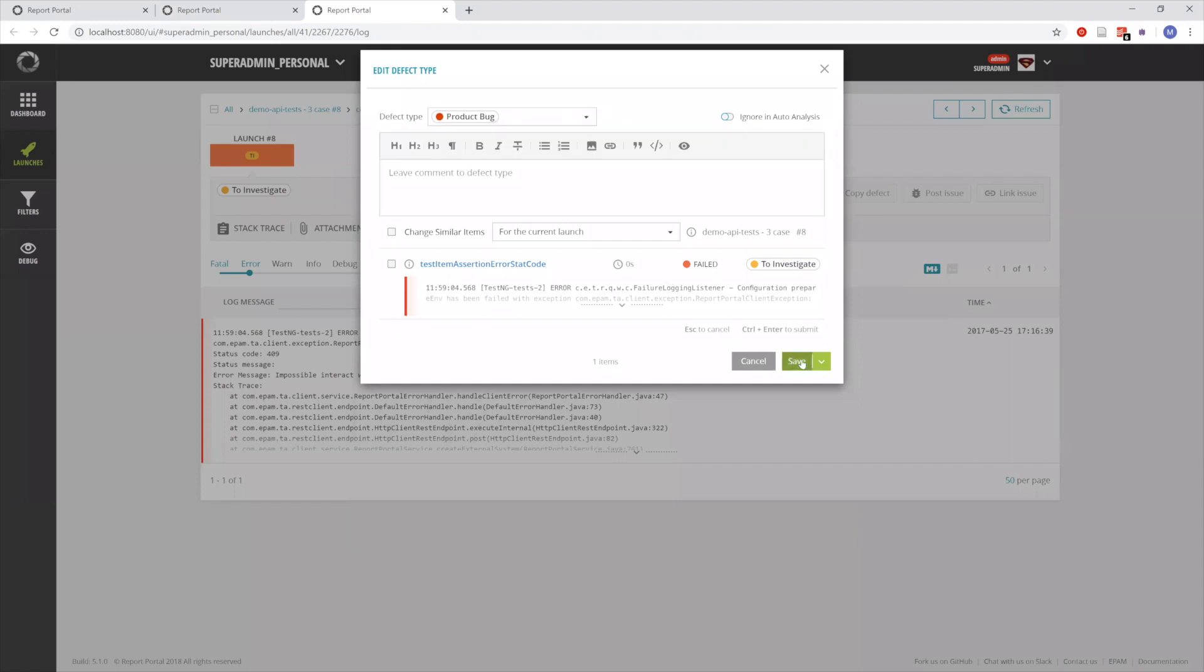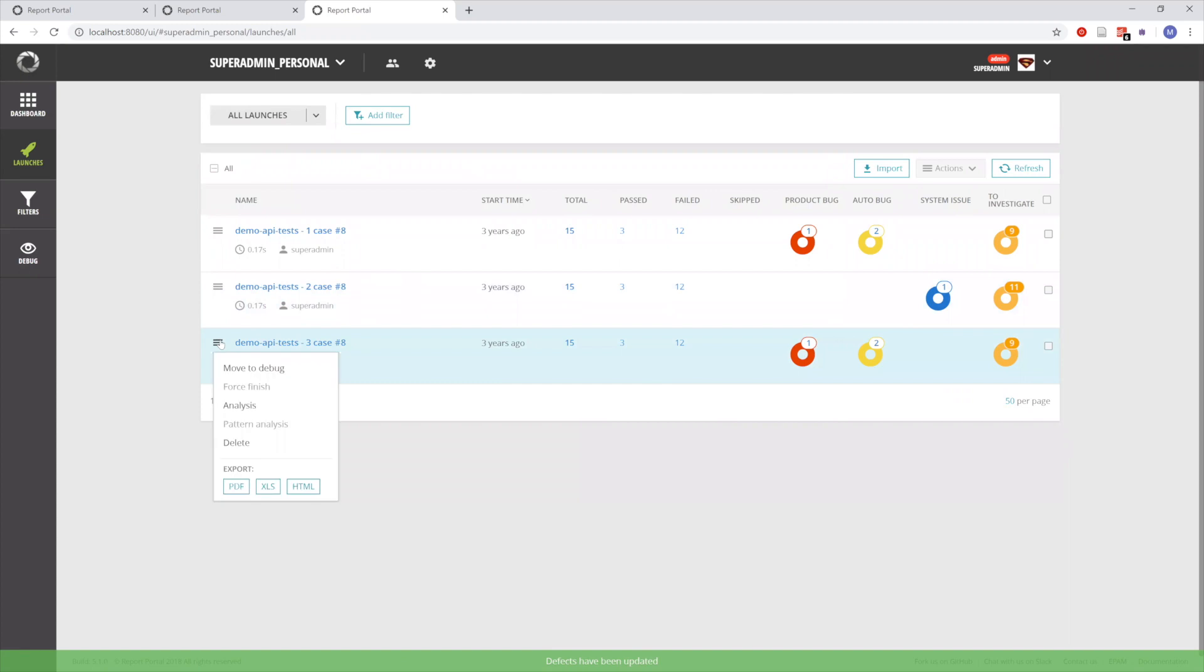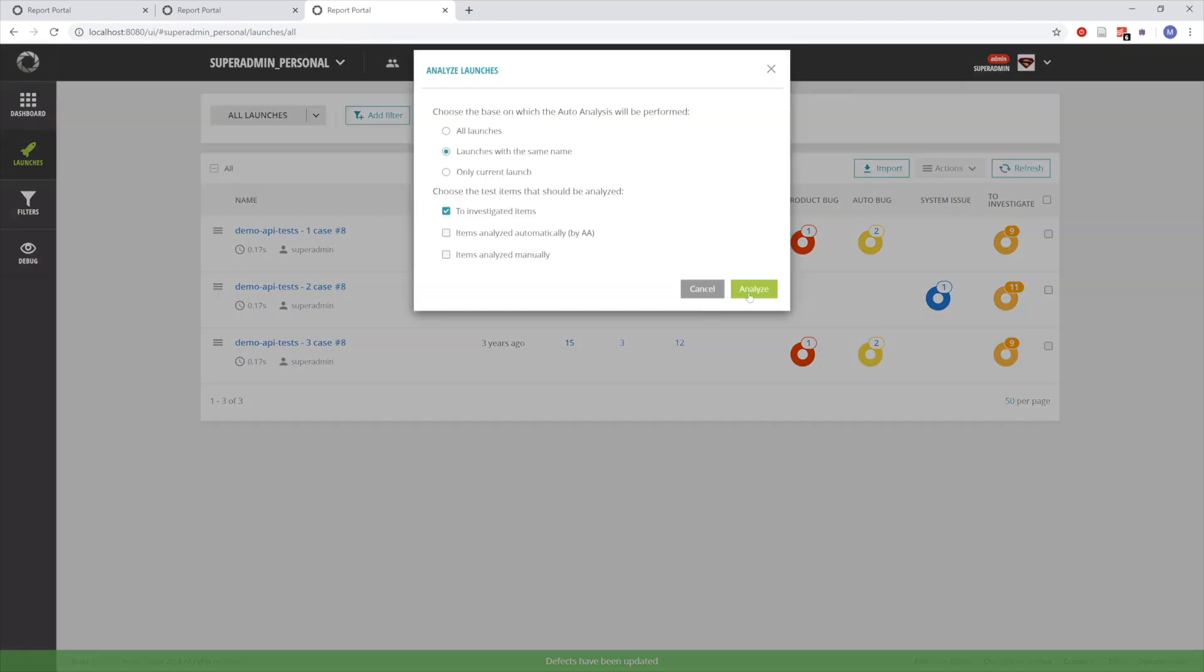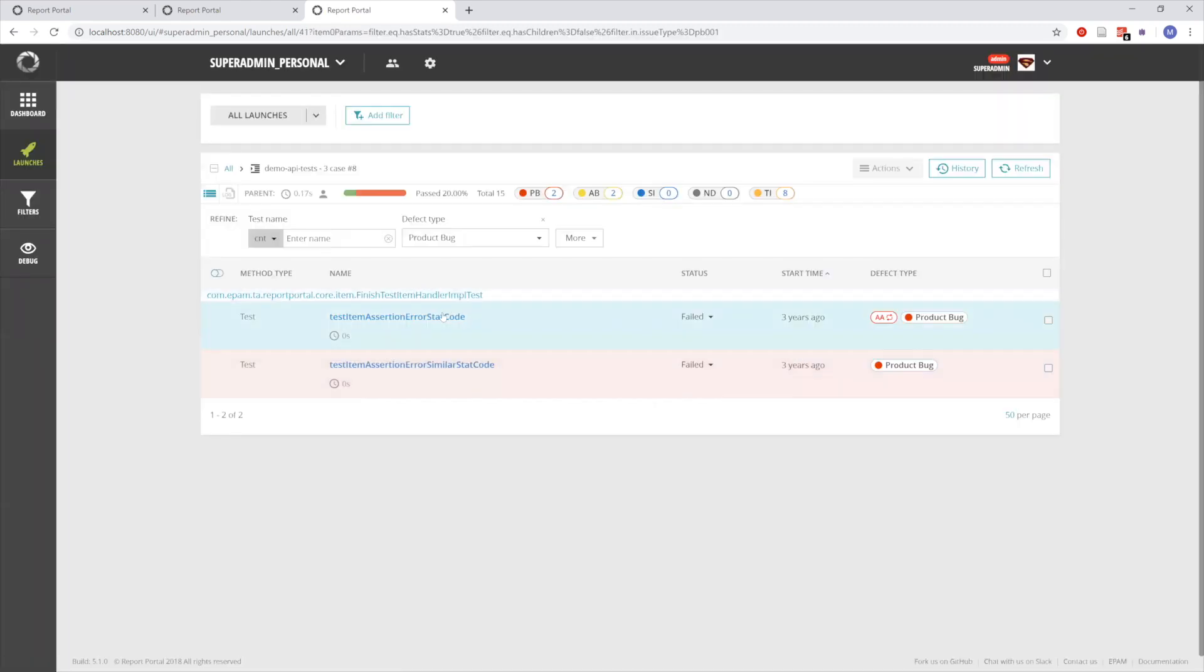Now we have three test items with defect types, and we are going to run analysis to check how it will work in this situation. As you can see, our analyzer assigned to the query test item a product bug defect type, so it found relevance by similar status code.